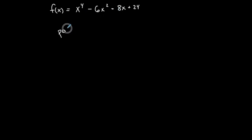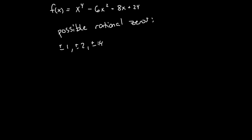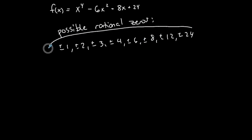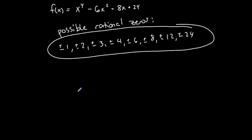I'll do one more — a fourth degree polynomial. Just listing all the possible rational zeros. All the factors of the constant term, which is 24: 1, 2, 3, 4, 6, 8, 12, and 24. This is going to have a lot. All divided by the leading coefficient, which is 1, so all divided by 1 just gives us back these same values. That's 2, 4, 6, 8, 10, 12, 14, 16 — 16 total possible rational zeros for this polynomial function. Again, only the possible ones. I have to plug these in to determine which ones actually work, to then actually determine the zeros from there.